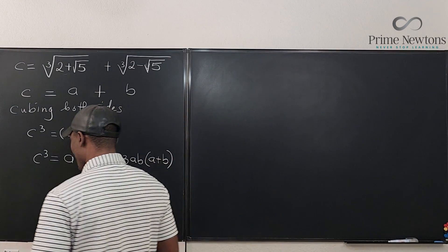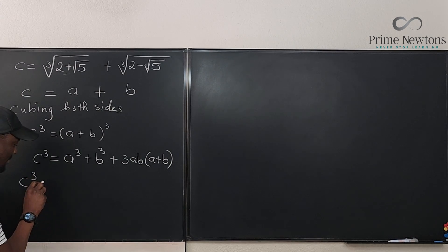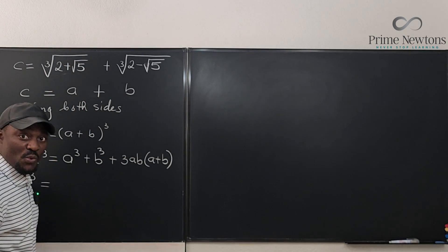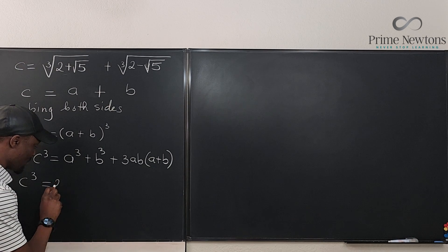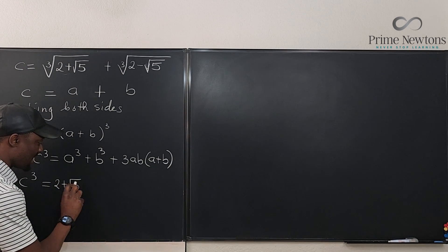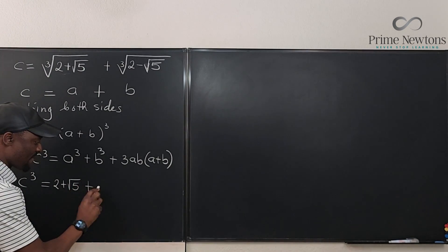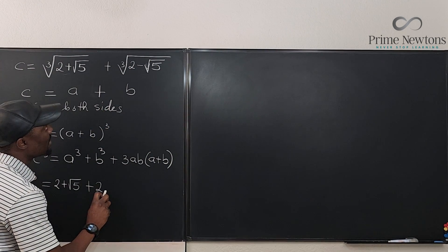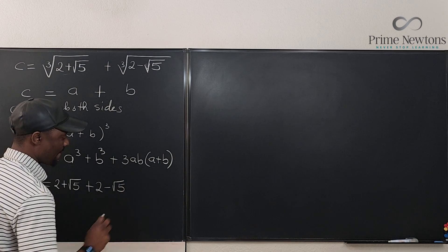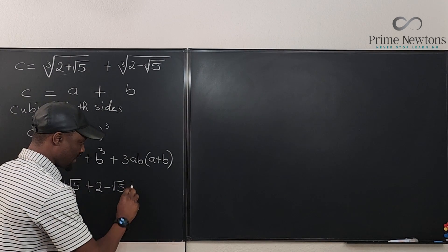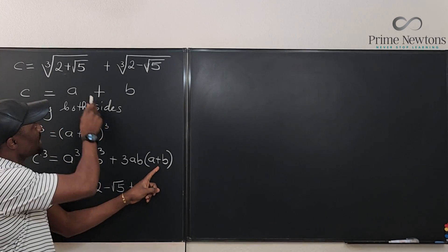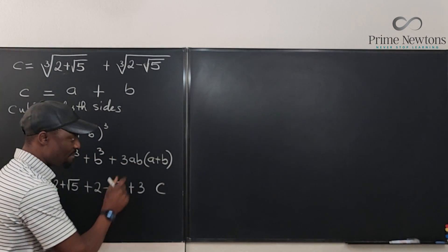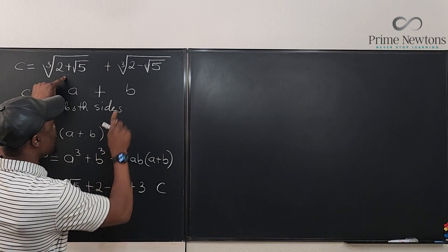Let's do the substitutions. On the left we have C cubed. For A cubed: cubing a cube root removes the radical, leaving just 2 plus the square root of 5. For B cubed: similarly, we get 2 minus the square root of 5. Then we have plus 3 times AB times C, since we've replaced A plus B with C. The only thing remaining to find is AB.